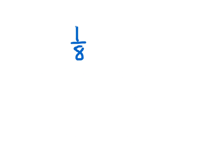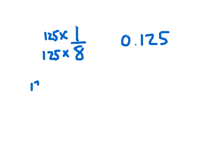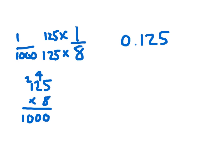Two final ones to remember: one eighth is equivalent to one hundred twenty-five thousandths. We get there by multiplying the numerator and denominator by 125, because 125 times 8 is 1,000 — I'll show you the work right here. And that's why we have thousandths and 125. Our final one: remember that one tenth is just 0.1. One tenth is one tenth. Memorize these two.